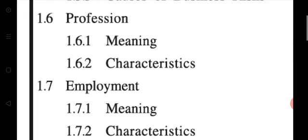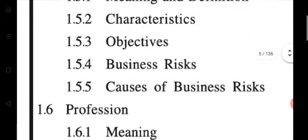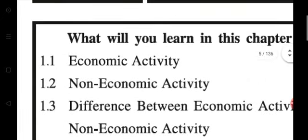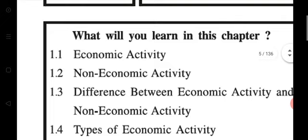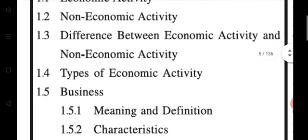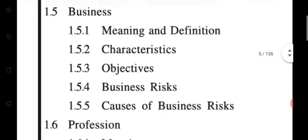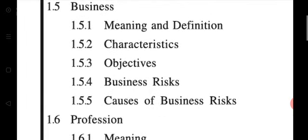We will cover the meaning of profession, characteristics of profession, and then employment — its meaning and characteristics. In lecture number one we studied economic activity, non-economic activity, and the difference between them. In lecture number two we studied the types of economic activity, then business — the first type — including its meaning, definition, characteristics, objectives, business risk, and causes of business risk.